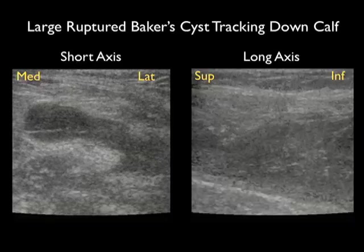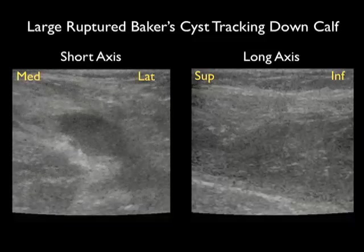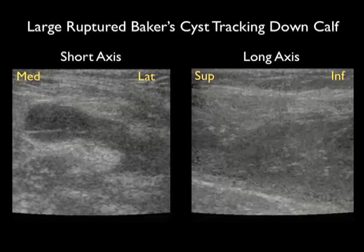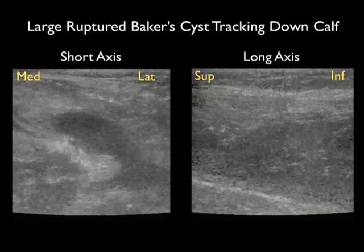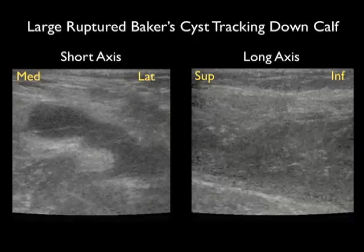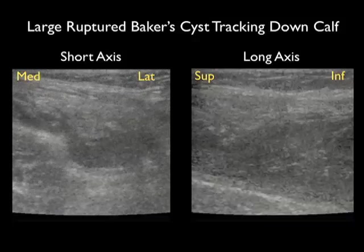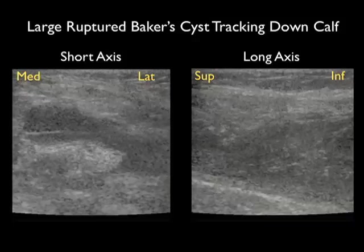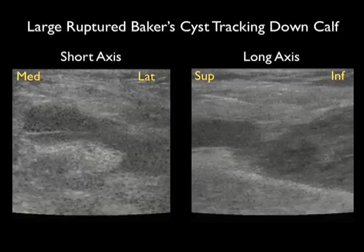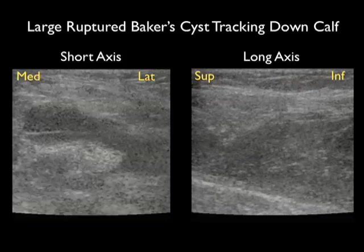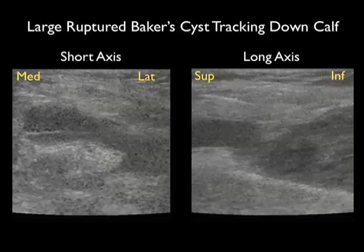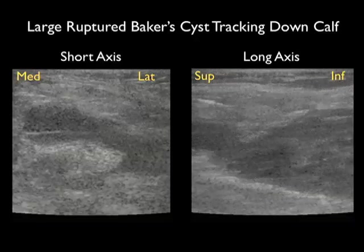In this video clip we see a large ruptured Baker's cyst tracking down the calf and closely approximating a DVT on clinical examination. We see a short axis view to the left — starting with the probe high within the popliteal fossa and moving the probe down the calf, we can see that the fluid collection spreads all the way down the calf. In the long axis view to the right, starting from superior on the left and inferior on the right, we can see the fluid collection of the ruptured Baker's cyst tracking from superior all the way inferiorly down the calf.